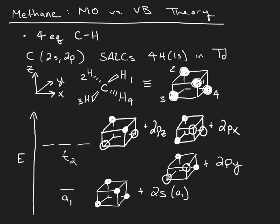To make it a little bit easier to see how these p orbitals will overlap with these SALCs, we can put the various axes in. Here is your z-axis on this T2 combination. Your x-axis comes out that way on that T2 combination. And then your y-axis goes towards the back for that combination there.